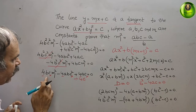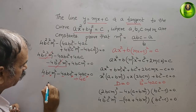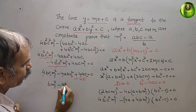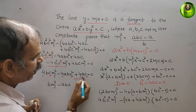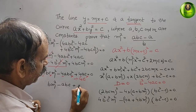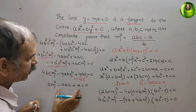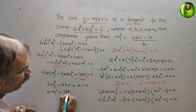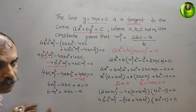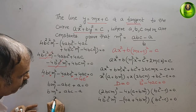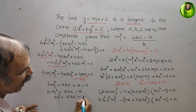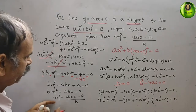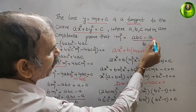Dividing by 4c we get bm² - ab·c + a = 0. Bringing the constants to the right side: bm² = abc - a, therefore m² = (abc - a)/b. This is exactly what we had to prove.